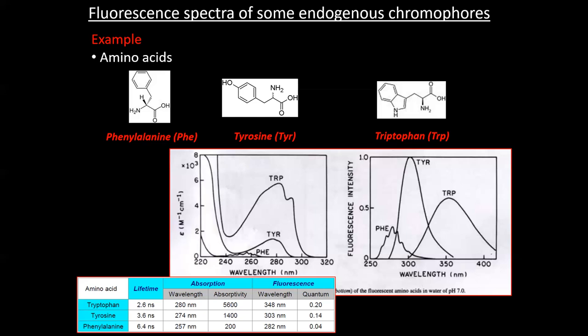For these amino acids, the quantum yield is different: tryptophan is 0.20 (20%), tyrosine is 0.14 (14%), and phenylalanine is 0.04 (only 4%) — phenylalanine appears much noisier. The fluorescence lifetime is also given: typically 2.6 nanoseconds, 3.6 nanoseconds, and 6.4 nanoseconds respectively. Each molecule has its own lifetime and its own quantum yield.